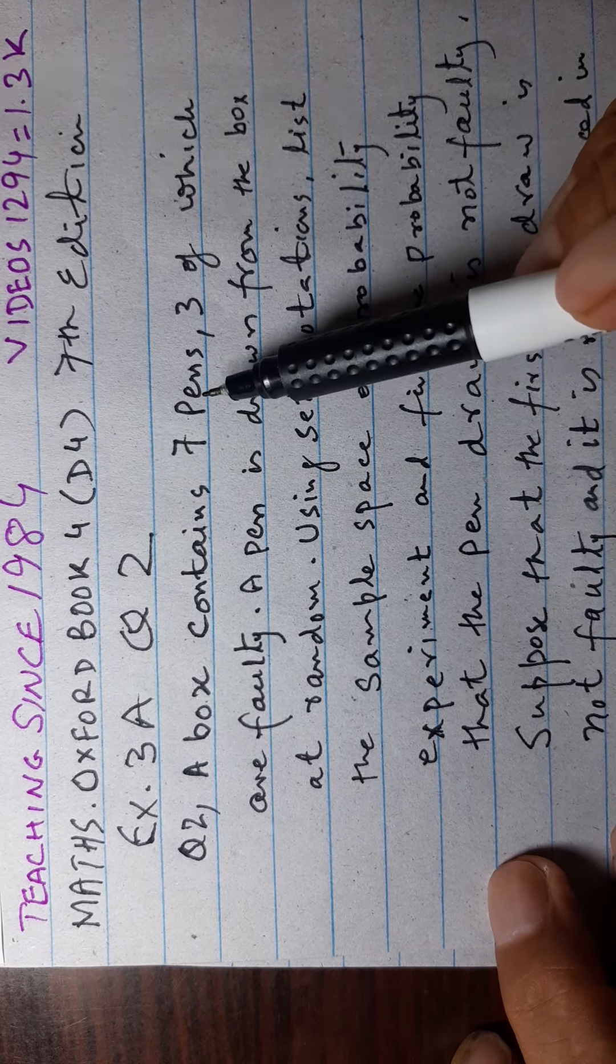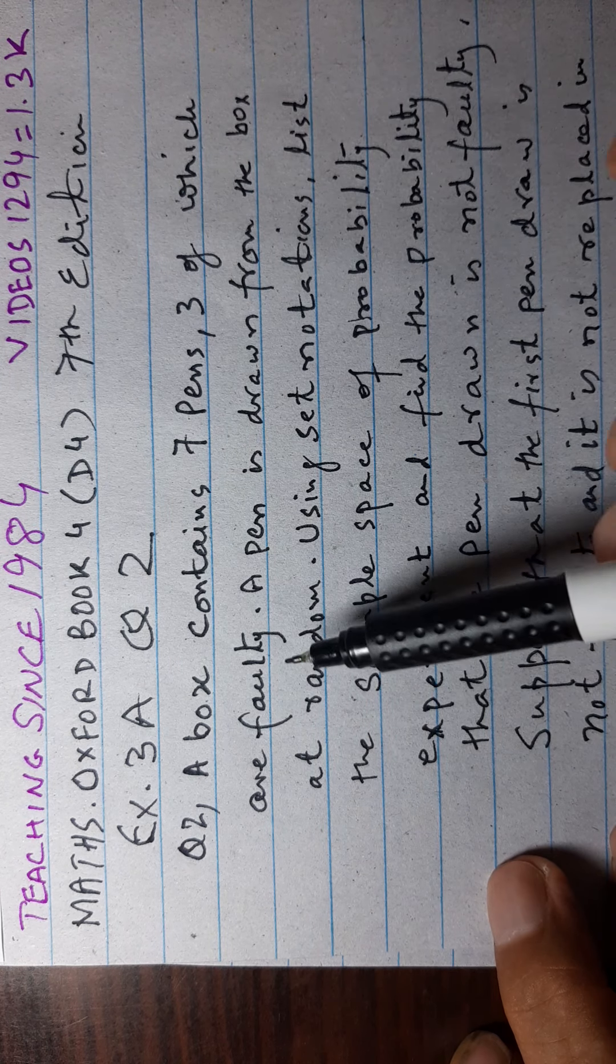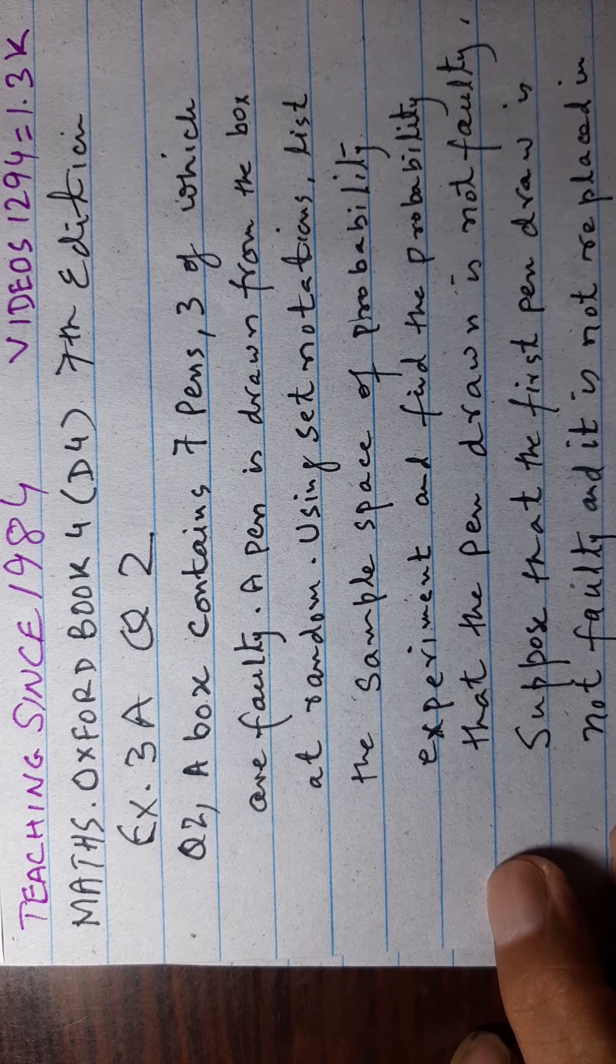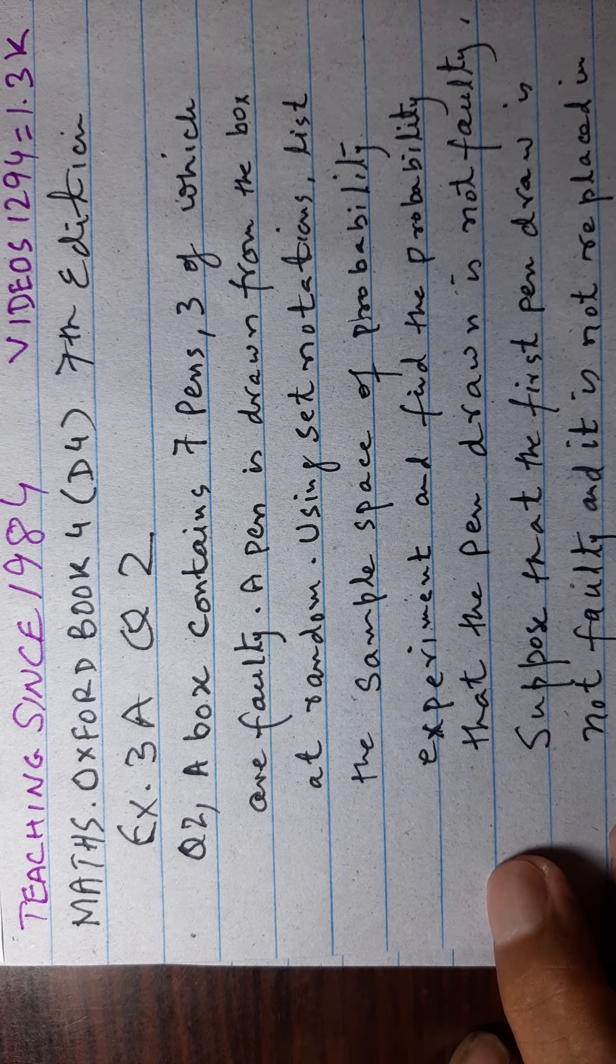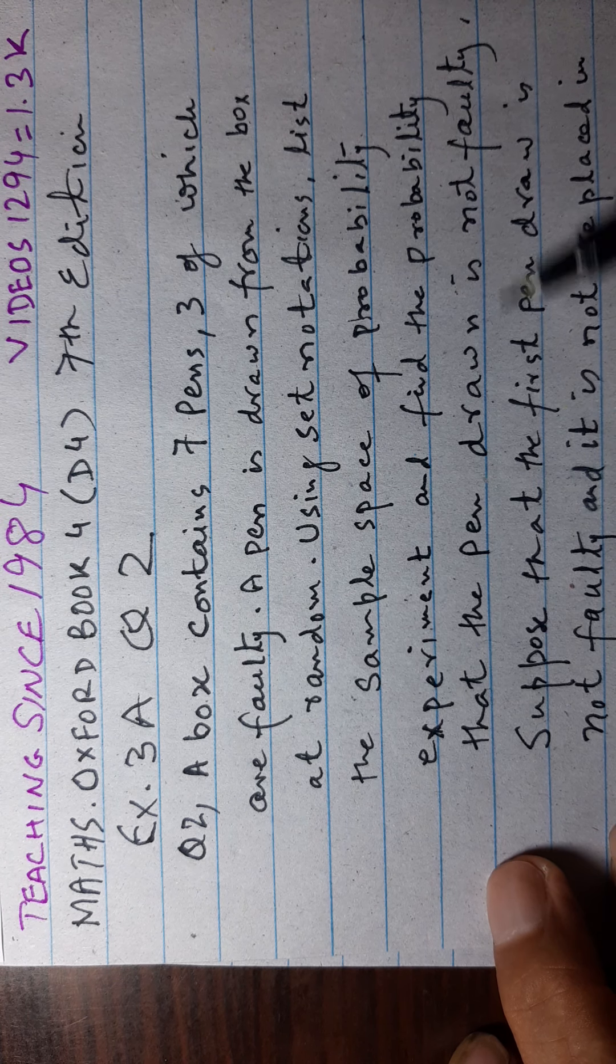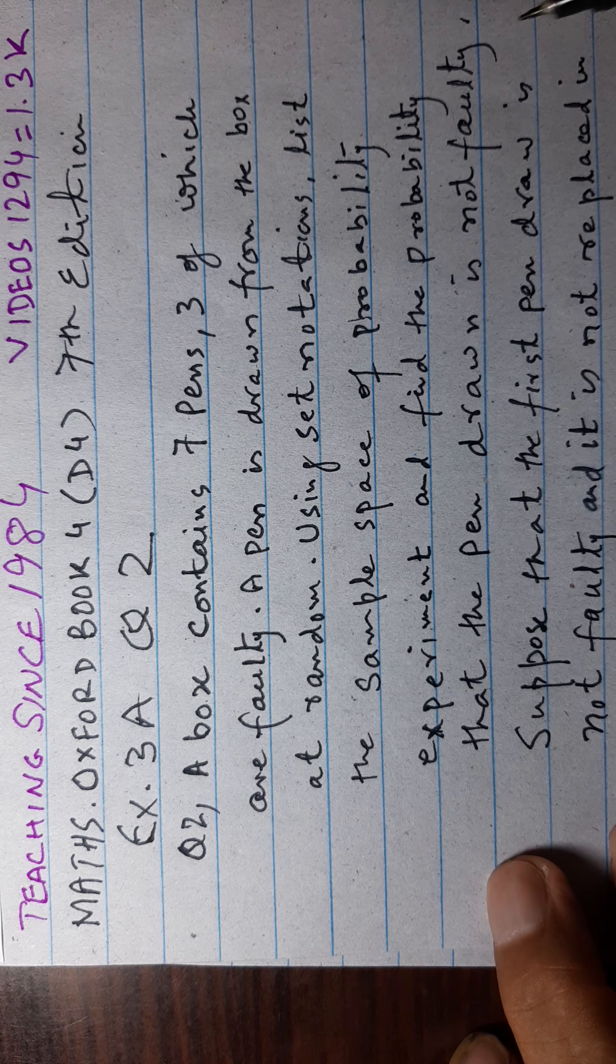A box contains seven pens, three of which are faulty. A pen is drawn from the box at random. Using set notation, list the sample space and find the probability that the pen drawn is not faulty.